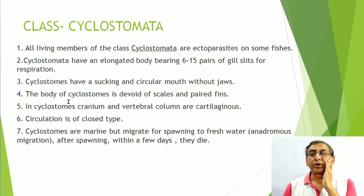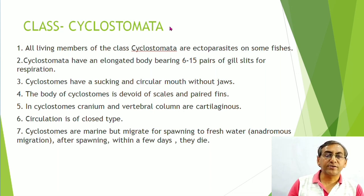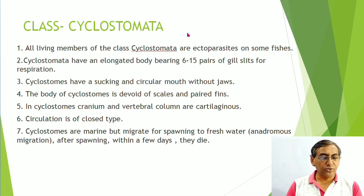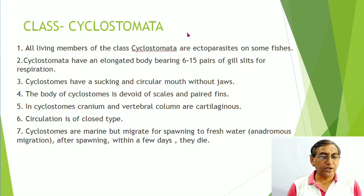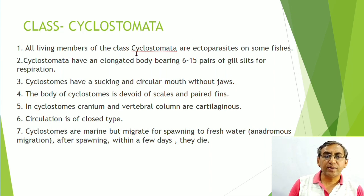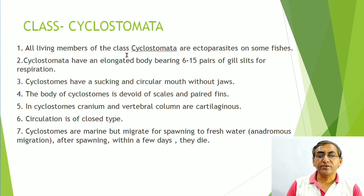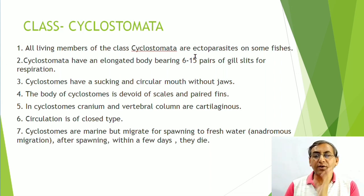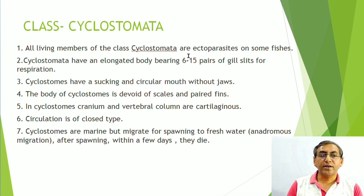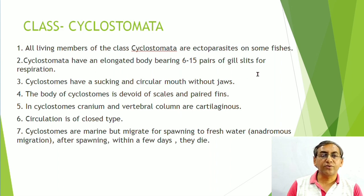Class Cyclostomata: 'cyclo' = circular, 'stomata' = mouth — circular-mouthed animals. All living members of Cyclostomata are ectoparasites on some fishes. They have an elongated body bearing 6 to 15 pairs of gill slits for respiration — the maximum number of gill slits compared to other fish classes. They have a sucking circular mouth and are agnathous (jaw absent).